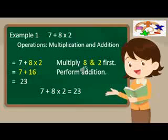In this example, the operations involved are multiplication and addition. If we will follow the GEMDAS rule, first multiply 8 and 2. And the answer is 16. Then add 7 plus 16 is 23. So 7 plus 8 times 2 is 23.